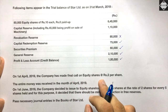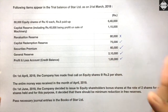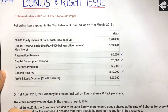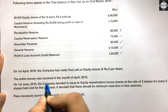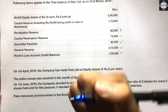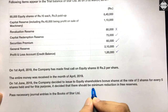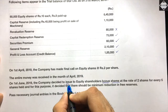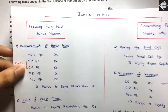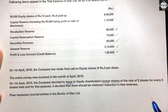On 1st April 2019, the company made a final call on equity shares at ₹2 per share. This tells us the company is going for a conventional final call — receiving the money to make equity shares fully paid up — and then issuing fully paid up bonus shares. The entire money was received in April 2019. On 1st June 2019, the company decided to issue bonus shares to equity shareholders, meaning they are going for the first type of bonus: issue of fully paid up bonus shares.